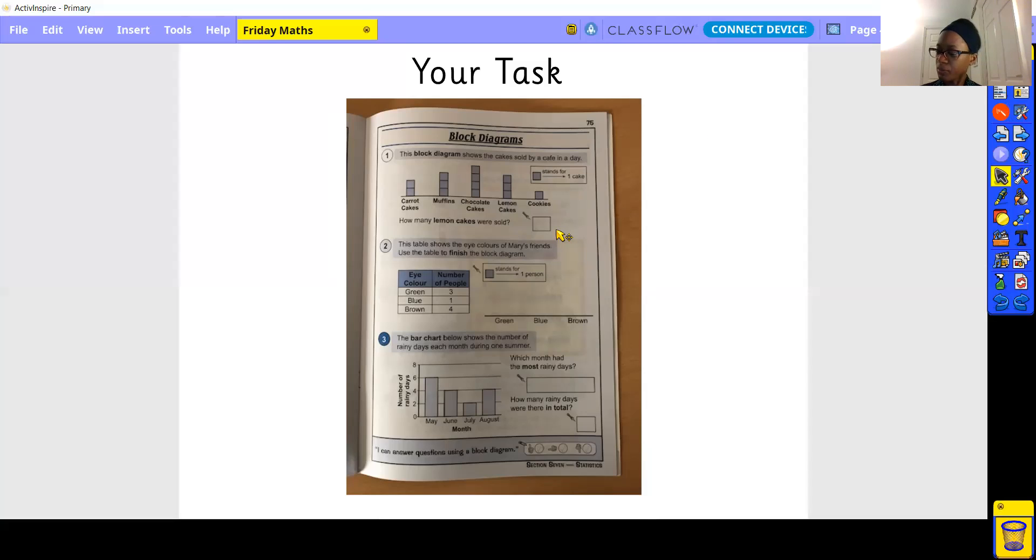Number two, this table shows the eye color of Mary's friends. Use the table to finish the block diagram. So you need to make this yourself. You know the key, what each block stands for. Give it a go and think about what's the number and the color.